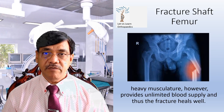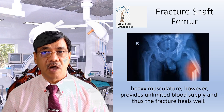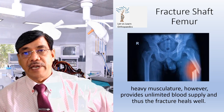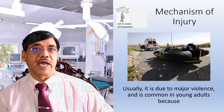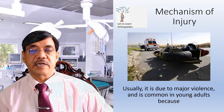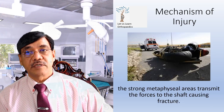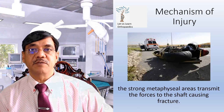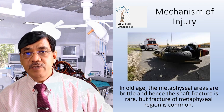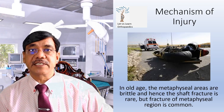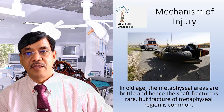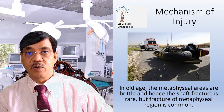Heavy musculature, however, provides unlimited blood supply and thus the fracture heals well. Coming to the mechanism of injury, it is usually due to major violence and is common in young adults, because the strong metaphyseal areas transmit the forces to the shaft causing it to fracture. In old age, the metaphyseal areas are brittle, and hence shaft fracture is rarely seen, but fracture of the metaphyseal region is common in old age.